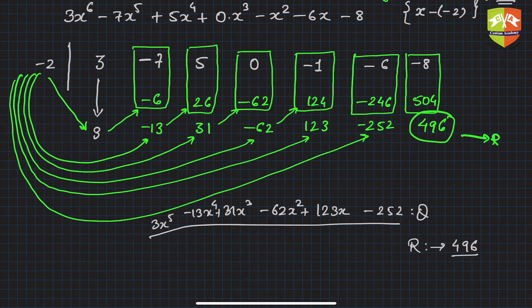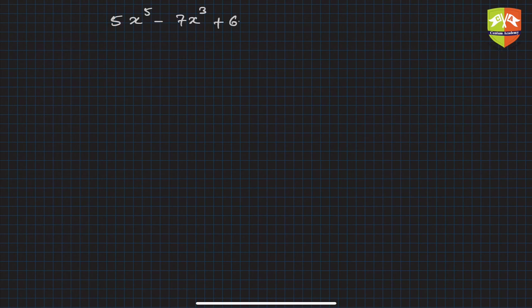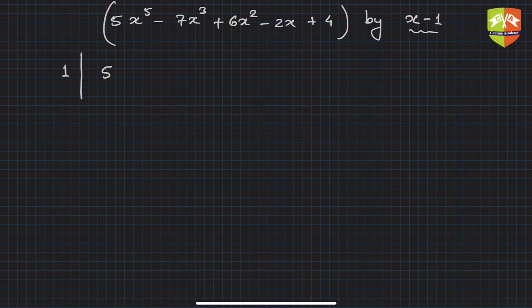Let's take one more example. Divide 5x⁵ minus 7x³ plus 6x² minus 2x plus 4 by x minus 1. Since the divisor is already in x-minus-alpha form, write 1 on the left. The polynomial is missing the x⁴ term, so the complete coefficient list is: 5, 0, -7, 6, -2, 4.